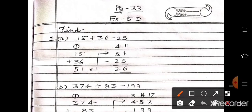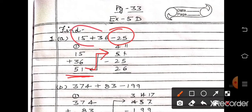6 and 5 is 11. Write 1 here, carry 1. 3 plus 1 is 4, and carry 1 makes 5. So the answer is 51. Now write your answer here: 51 minus 25. Now we subtract. First we added both numbers, then we subtract 25 from the sum.